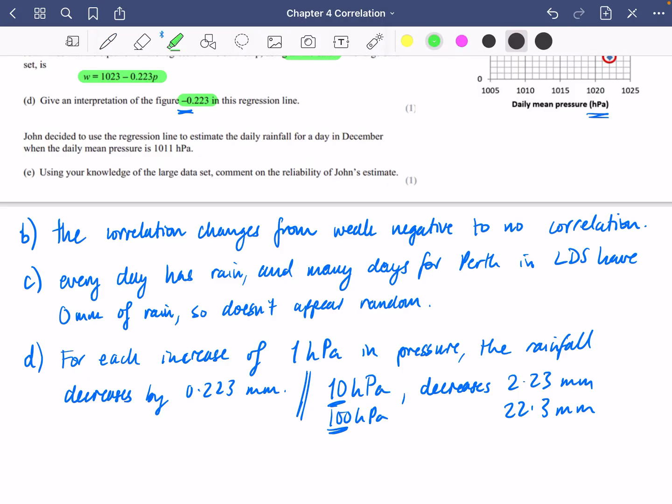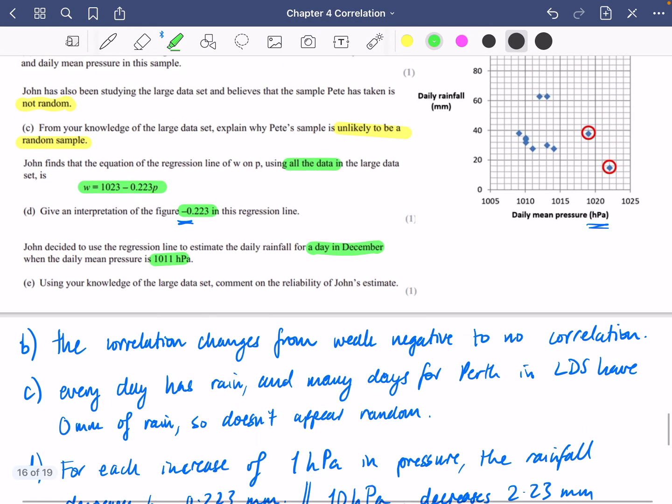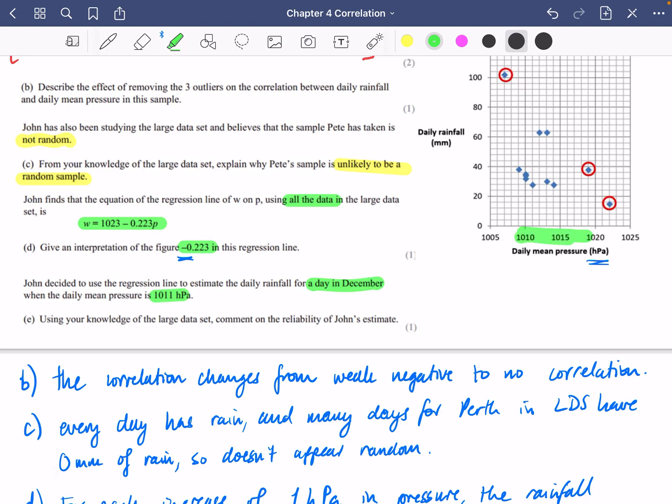Last of all it says that John decided to use the regression line to estimate the daily rainfall for a day in December when the daily mean pressure was 1011 hPa. Using your knowledge of the large data set comment on the reliability of John's estimate. So 1011 kind of feels like it's inside the range so maybe it's going to be interpolation so maybe it's going to be okay but here's the bad thing.